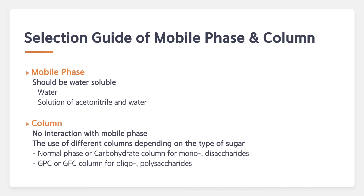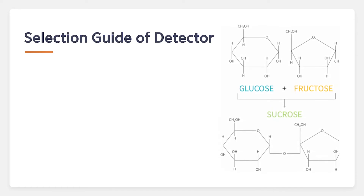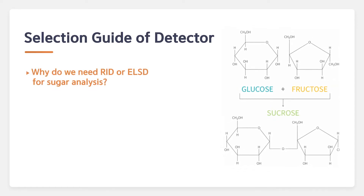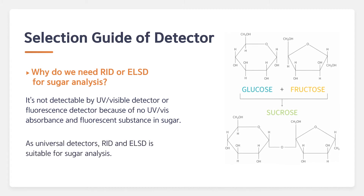Refractive index detector (RID) and evaporative light scattering detector (ELSD) are popularly used in sugar analysis. This is because sugars don't have any UV-visible absorbance or fluorescent substance, so they cannot be detected by UVD or FLD.